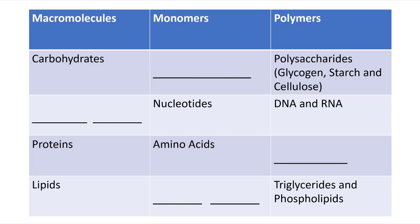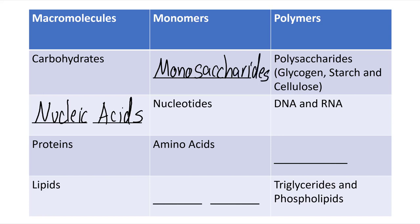So to summarize our discussion of these macromolecules, carbohydrates, nucleic acids, proteins, and lipids. Now when we look at the carbohydrates, the monomers are called monosaccharides. And the polymers are the polysaccharides, glycogen, starch, and cellulose.